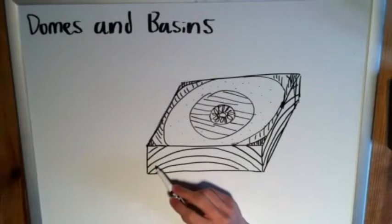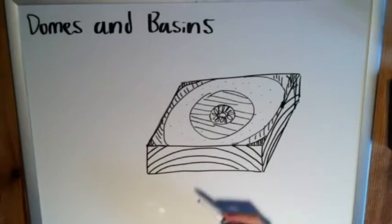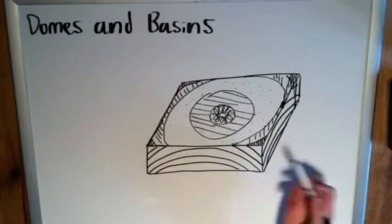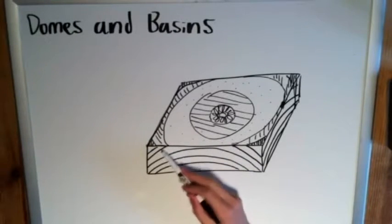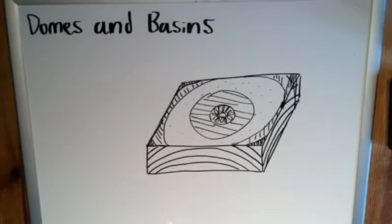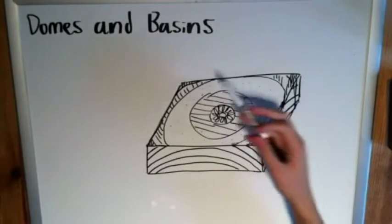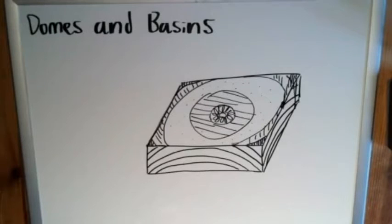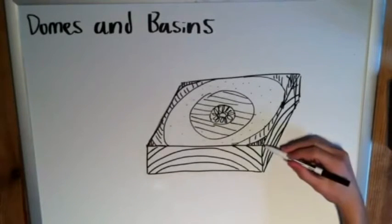If you look at this face of the block, you can see what appears to be an antiform — we've got strata with a crest forming up here and the limbs dipping downwards. We can label that feature as an antiform. However, if we did not see the full picture, we might simply label it as a plunging anticline, which in this case would be incorrect. I'll get into plunging in a later video.